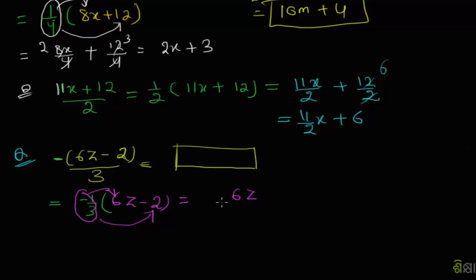Dividing (6z - 2) by 3: 6z divided by 3 equals 2z, minus 2 divided by 3 equals -2/3. So the answer is 2z - 2/3, or -2z + 2/3.